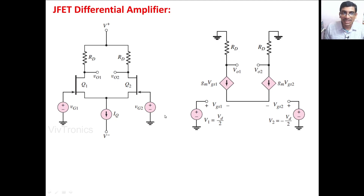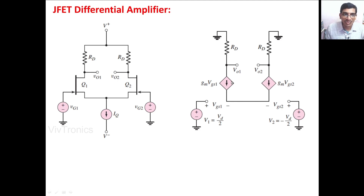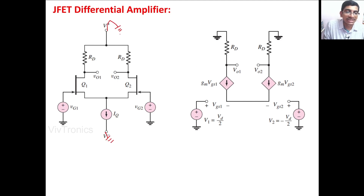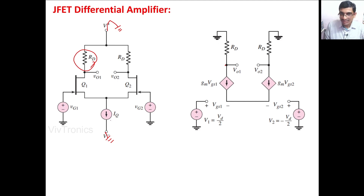If you draw the small signal equivalent circuit of this J-FET differential amplifier, it will be looking like this. The J-FET Q1 can be represented with its small signal equivalent circuit, which contains VGS1 at the input side and at the output side a GmVGS1 dependent current source. We have eliminated the small R0 resistance, which is in parallel with GmVGS, in order to simplify our analysis. In the small signal analysis, we are going to ground V+ and V-, so the Rd resistance is connected between the drain terminal and the ground terminal. The IQ constant current source can be represented with the R0 resistance.